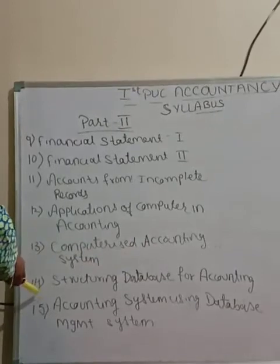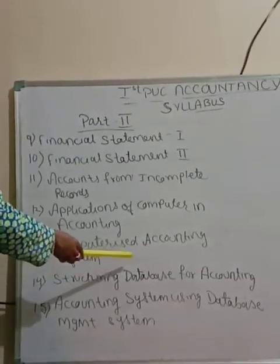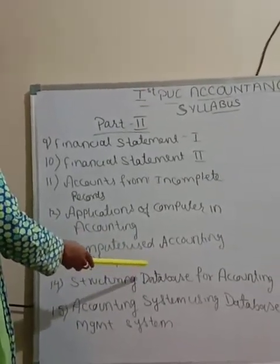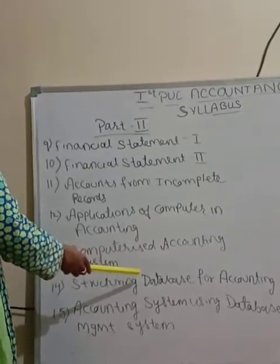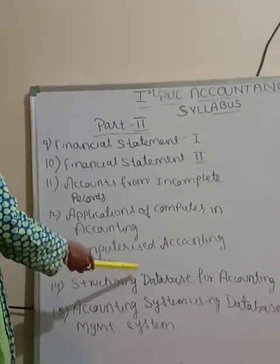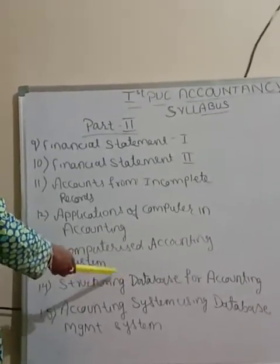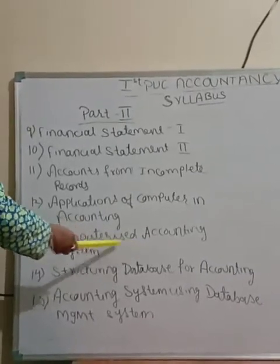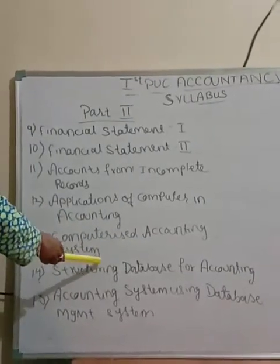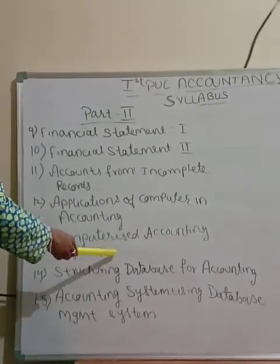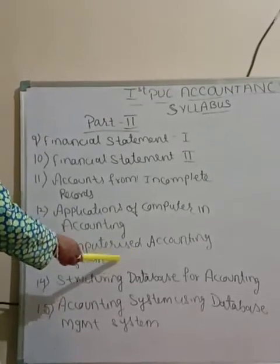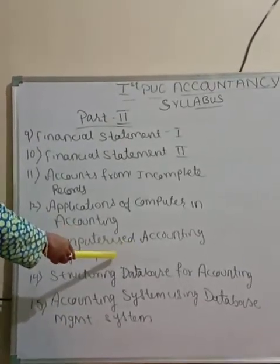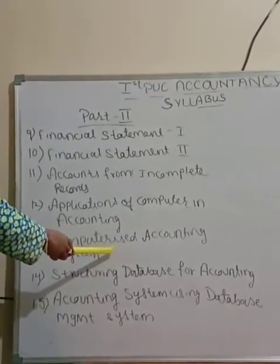Chapter 14 is Structuring Database for Accounting. Here we are going to learn the data processing cycle, the Entity Relationship (ER) model, and designing relational database schemes.